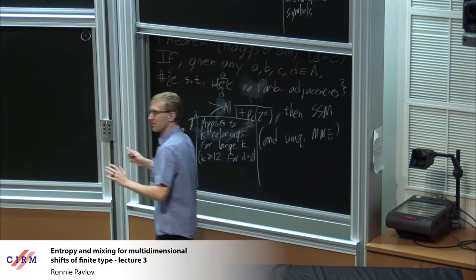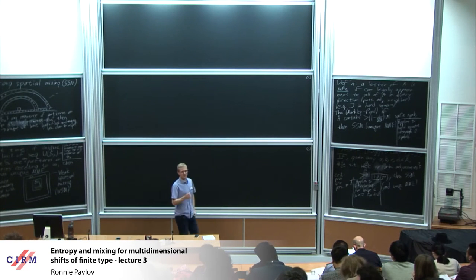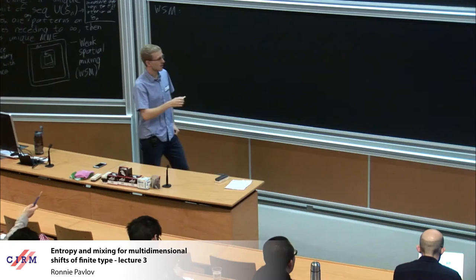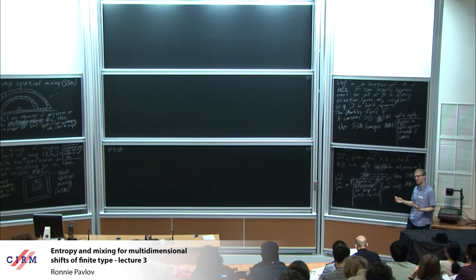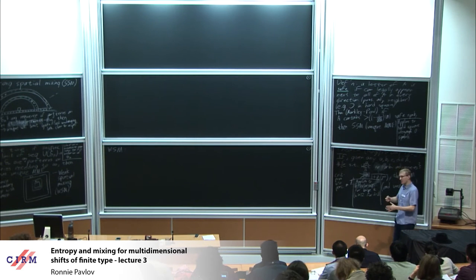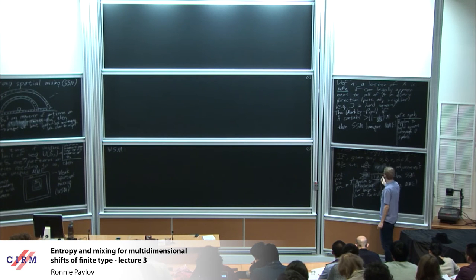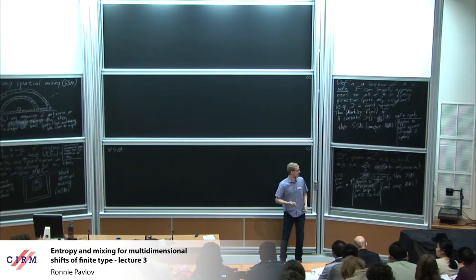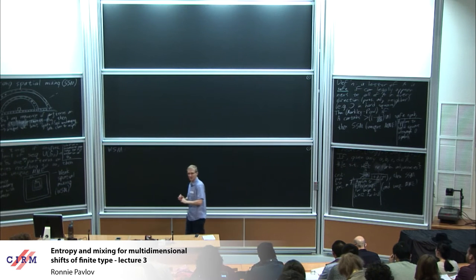So now at least we've solved the problem of convincing you that sometimes you get these properties. What I still haven't done is told you why we should care about these properties at all. For every proof I know of where you prove these things in the literature, what you end up getting is that this decay is actually with exponential rate. So when I talk about having WSM and SSM, I'm going to assume it's with decay rates that are actually exponential as these boundaries go away to infinity, and all of these theorems give you exponentially decaying probabilities.